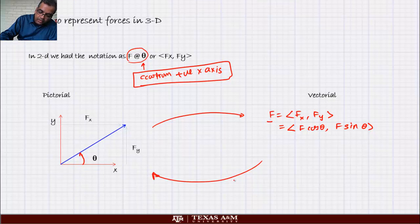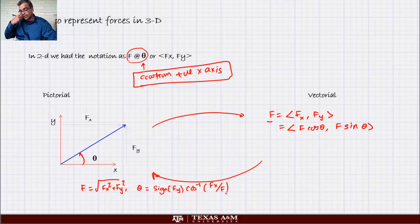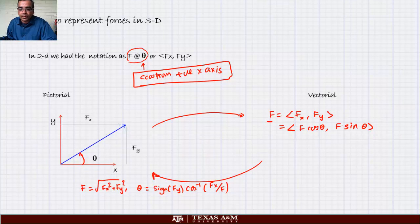Converting from components gives us F equals the square root of Fx squared plus Fy squared, and theta equals the inverse cosine of Fx over F (or inverse sine of Fy over F). That's how we convert back and forth in 2D. Now we have to do the same kinds of things in 3D.